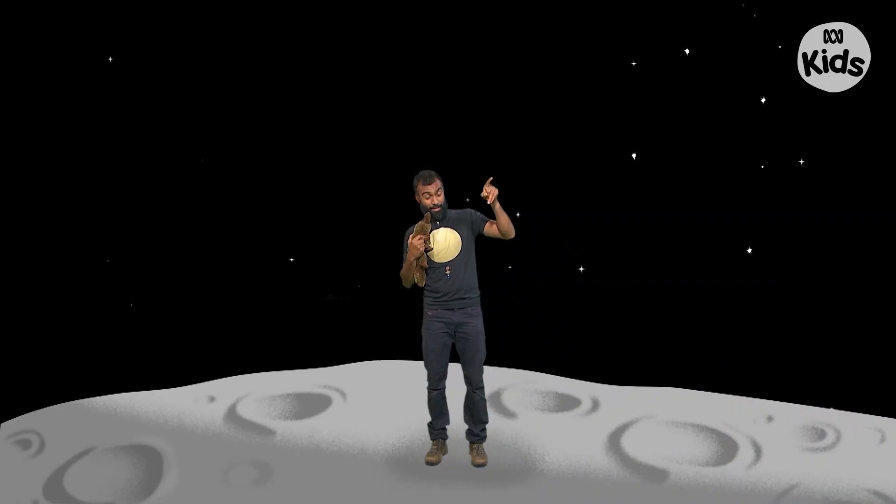Yeah, that one over there, yep. That's the Southern Cross. And that one over there, that's the giant pancake. What do you mean that's not a real constellation?